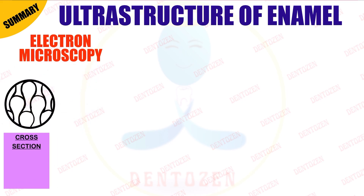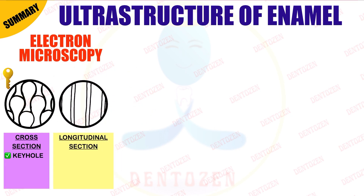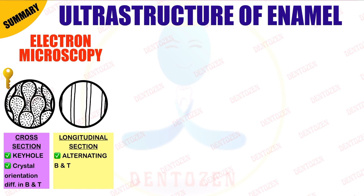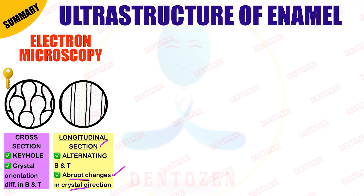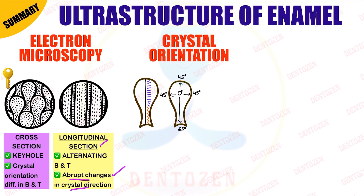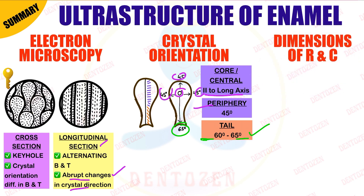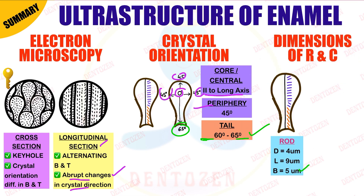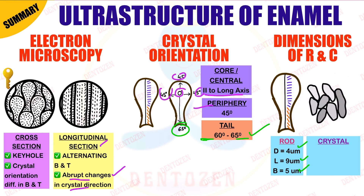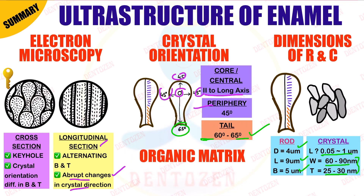Summary of ultra structure of enamel: First, electron microscopy — cross section gives keyhole-shaped enamel appearance; longitudinal section gives alternating bodies and tails. Second, crystal orientation is different in bodies and tails in cross section, with abrupt changes in longitudinal section. Crystals in the core of the head are at zero degrees (parallel to long axis), at the periphery 45 degrees, and in the tail 60–65 degrees. Dimensions: rod breadth 5 µm, length 9 µm, diameter 4 µm; crystal length 0.05–1 µm, width 60–90 nm, thickness 25–30 nm. Organic matrix is present around the three-fourth circumference as rod sheath and as an envelope around crystals.